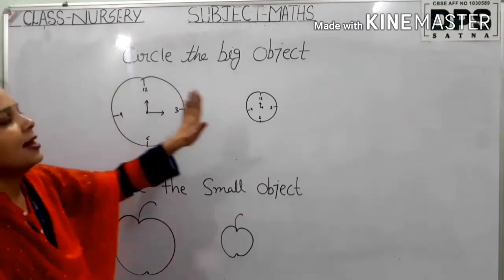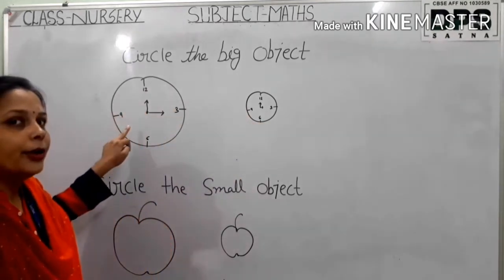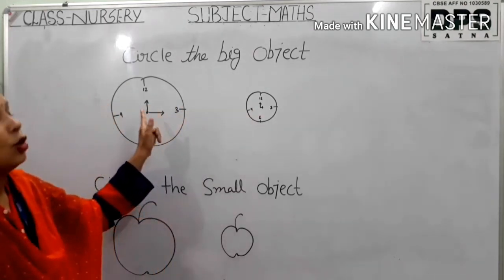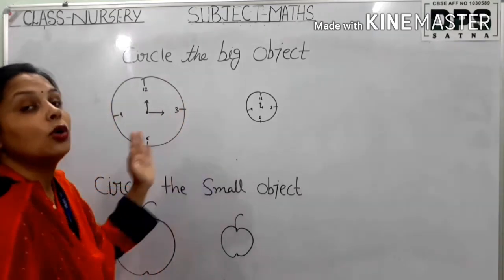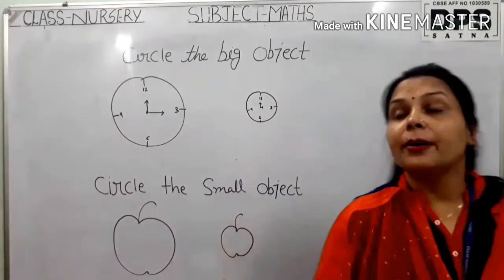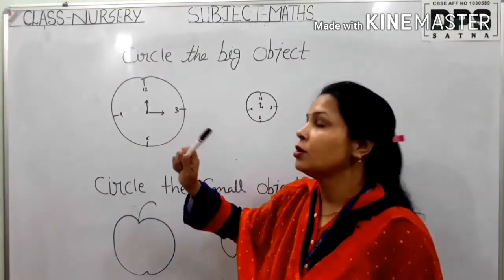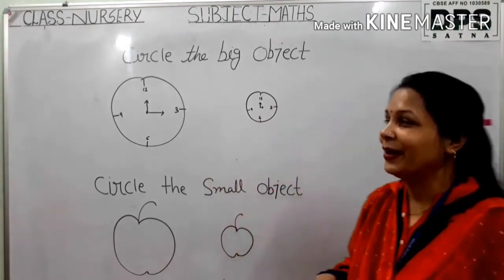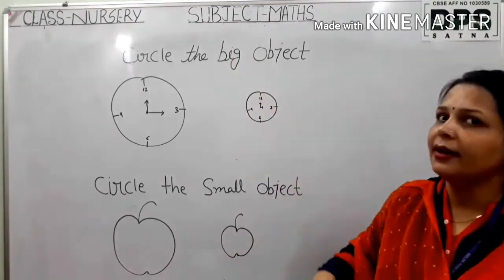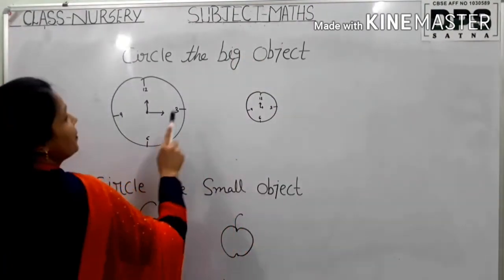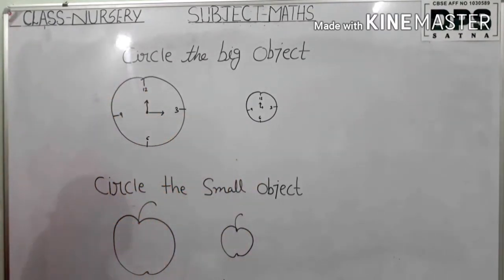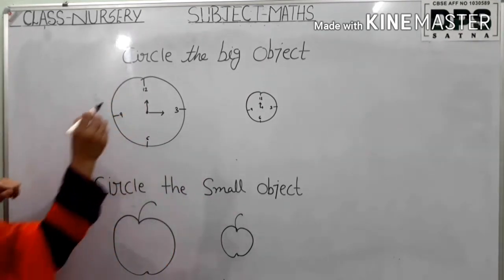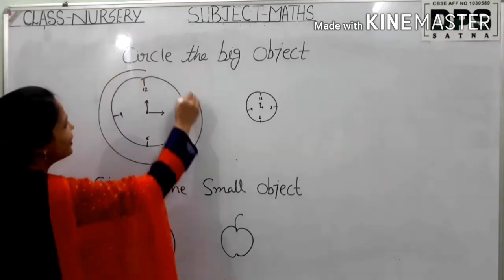Here is a big clock and here is a small clock. Which clock looks small here? This one looks small, right? This one is big. We compare the two objects — which one is big, which one is small — so we can circle the big object. This is the big clock and this one is the small clock. Now circle the big clock. This one is big — now I circle it.